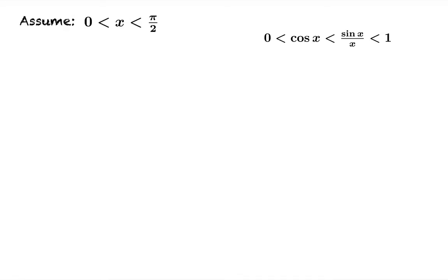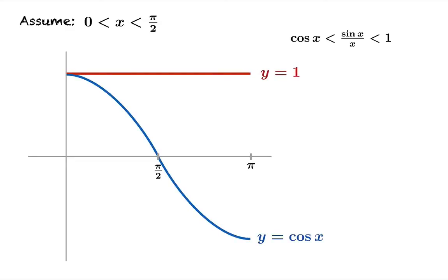Now we're in the home stretch for at least half of our argument. So if we took a look at the graph of the constant function one and the cosine function, we will notice that this inequality forces the graph of sine x over x to be trapped between these two at least when x is between zero and pi over two.